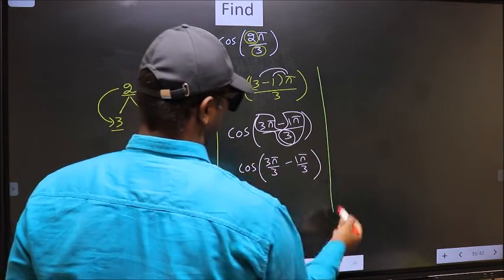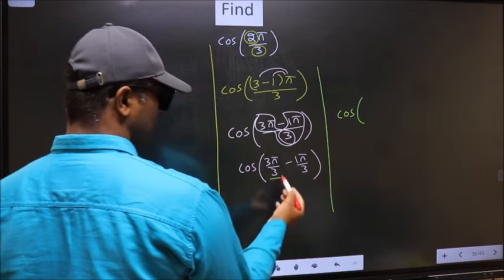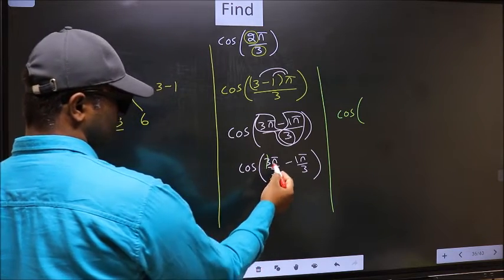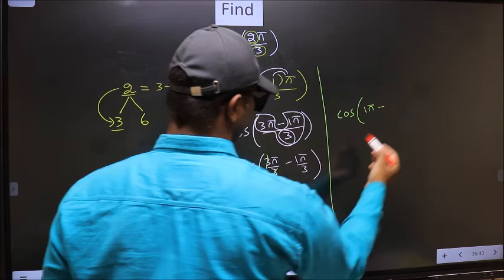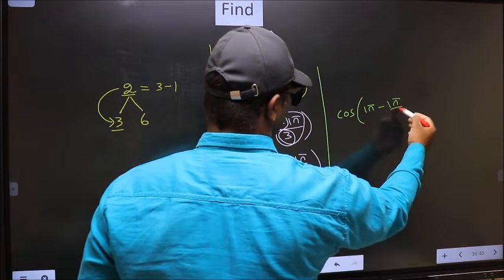Next, cos. Now here you should cancel. We get 1π minus this, no change, 1π by 3.